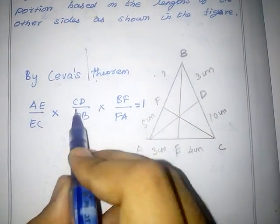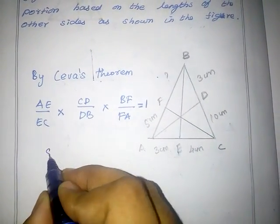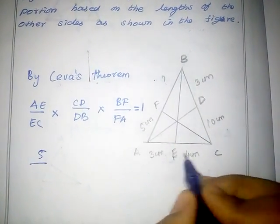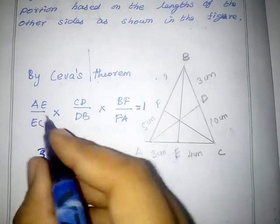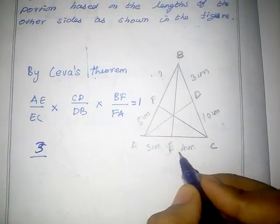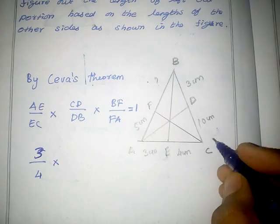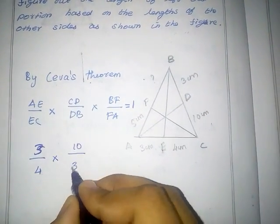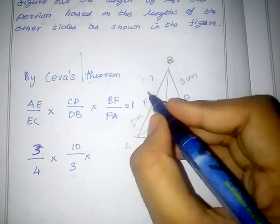AE is equal to 3 and EC is equal to 4 into CD, 10 and DB is equal to 3 into BF.